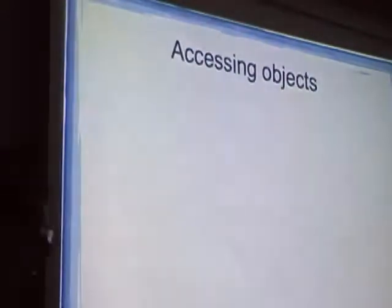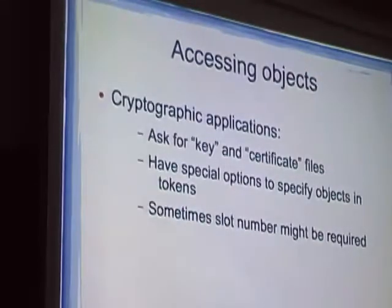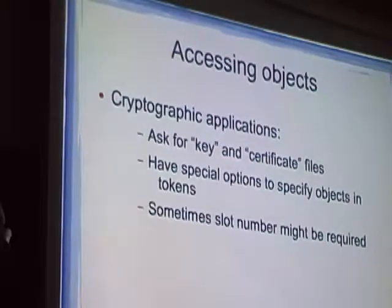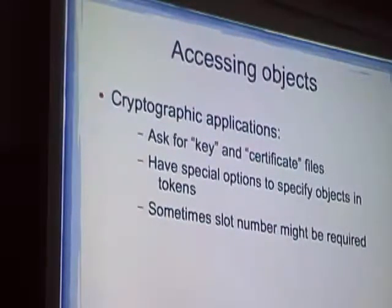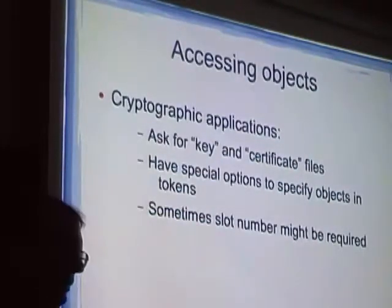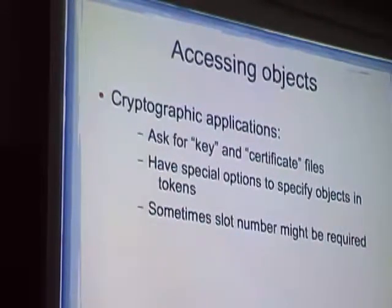Now I'm going to talk about accessing objects and what the issues are. In typical cryptographic applications today, when you want to provide your identity, they ask you for a key file and a certificate file — a file that contains your private key and your certificate. If you use the GnuTLS CLI client or the OpenSSL client in order to connect to a site, you can specify at the command line a key and a certificate. But when you want to specify a key that resides on a token, you have to use a really special option, which is pretty hard in almost every program.